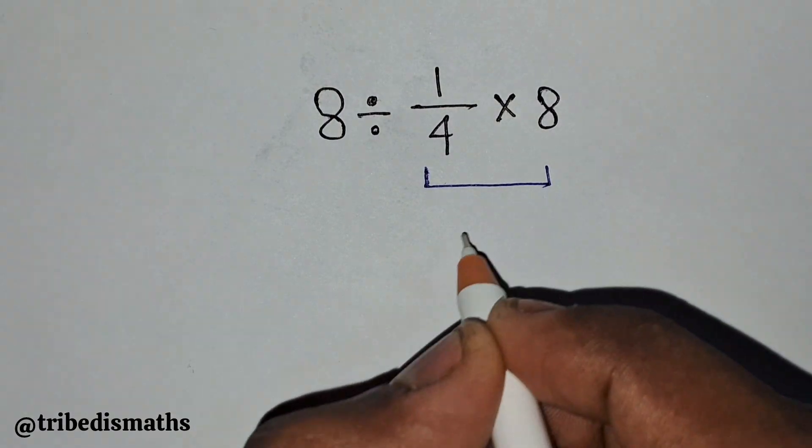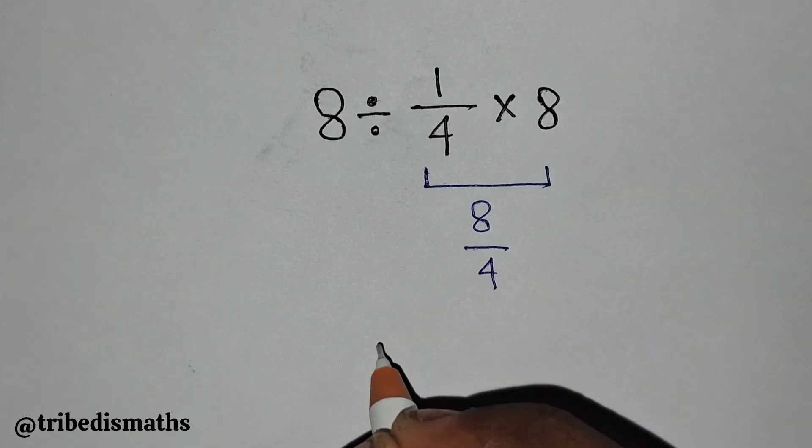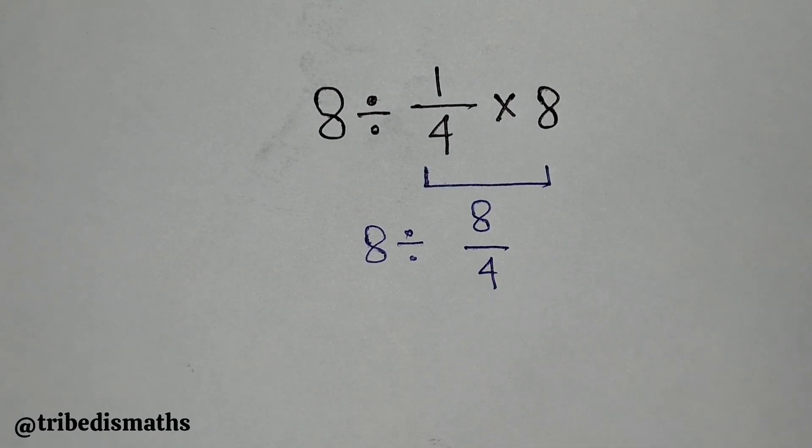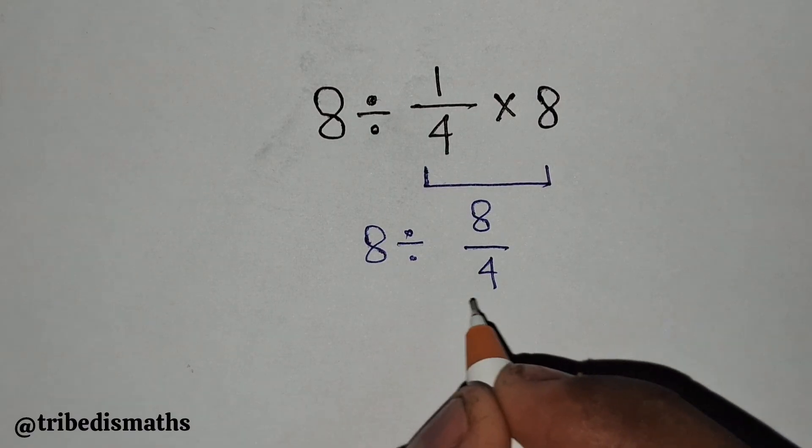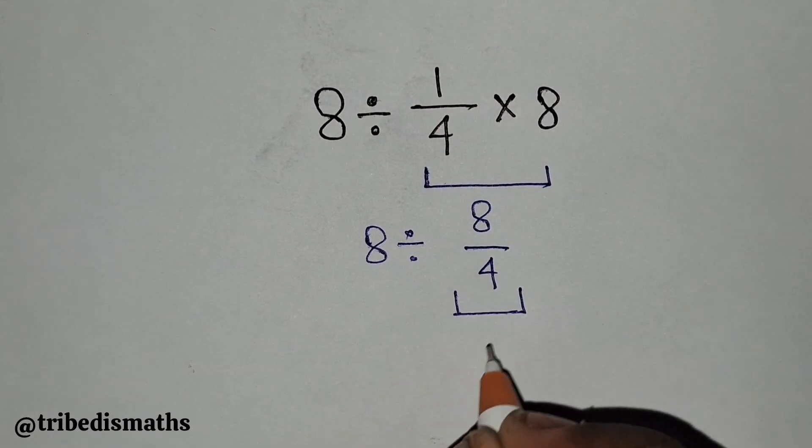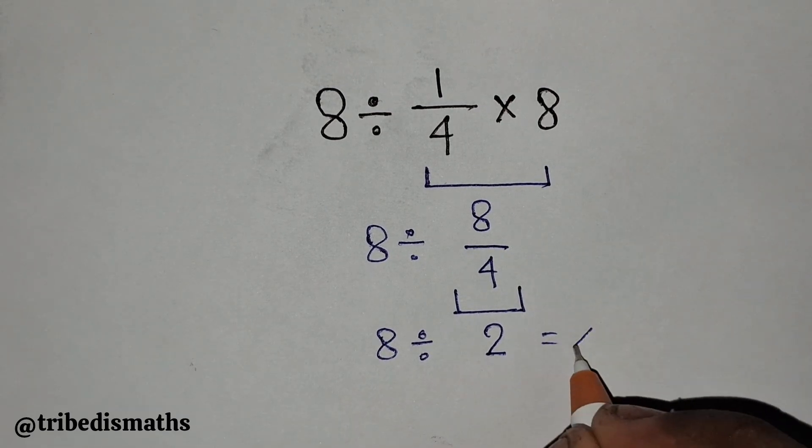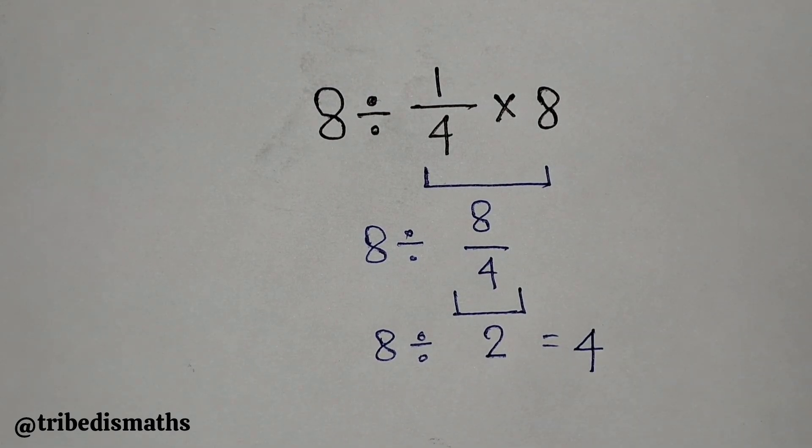equals 8/4, so the expression becomes 8 divided by 8/4. Now again, 8/4 equals 2, so it becomes 8 divided by 2, which equals 4. But 4 is not